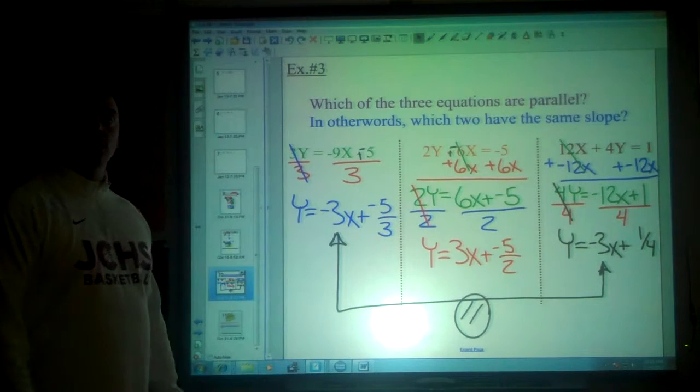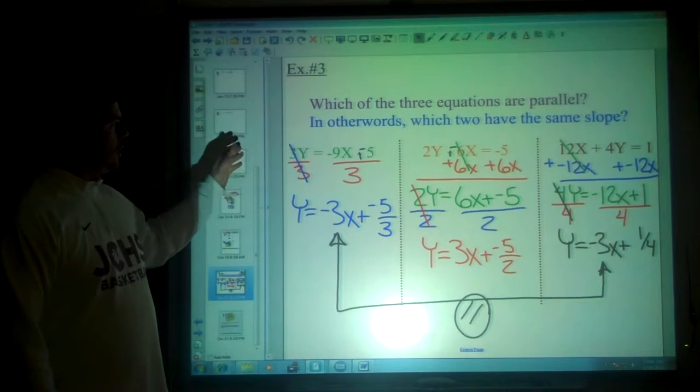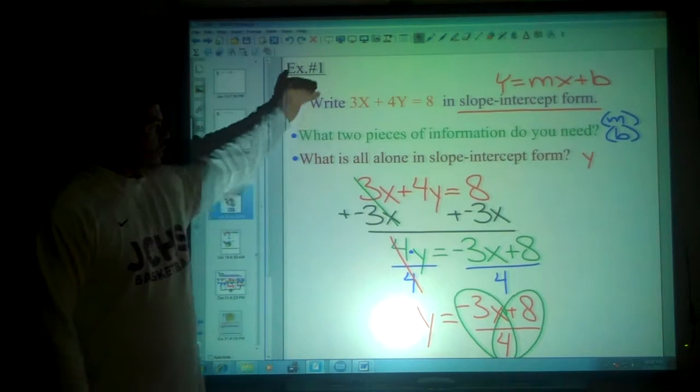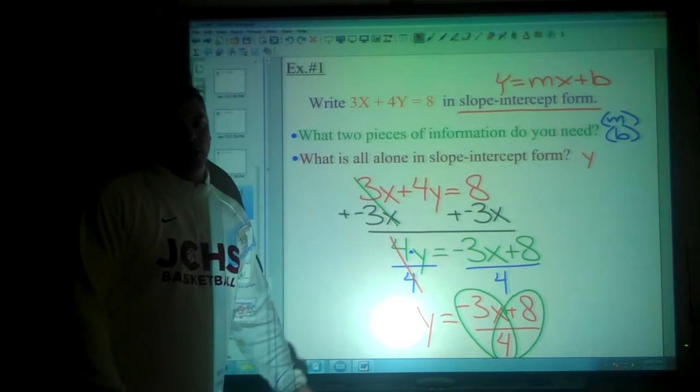And that's how we can look at parallel lines. Once again, involving slope-intercept form, y equals mx plus b. You can convert into slope-intercept form if you just get y alone.